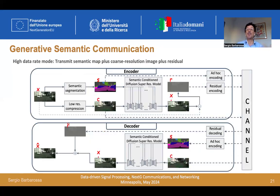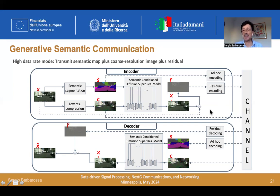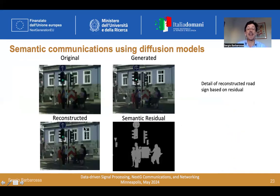If we want to reconstruct specific points — such as traffic lights — with bit-level equality, we can run a high data rate mode. We use the model on the transmitter side to generate a residual: the difference between the original and the encoded image. We then transmit three flows of data — the segmentation map, the coarse resolution image, and the residual — and use all three at the receiver side. Using the residual, we are able to reconstruct exactly, for example, the traffic lights or whatever we deem important to reconstruct even at the bit level.